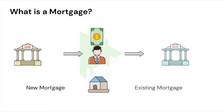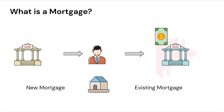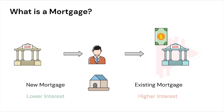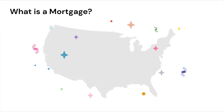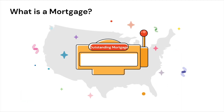Sometimes homeowners take out a new mortgage loan on a house to repay the existing mortgage. This is usually done when interest rates in the economy have fallen and the new mortgage has a lower interest rate than the existing mortgage. Home ownership is a core part of the American dream. Total outstanding mortgage debt in the US is currently a whopping 17 trillion US dollars.